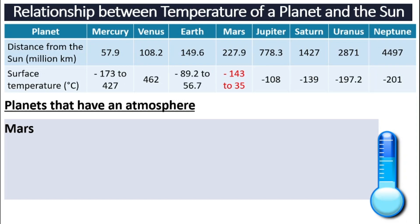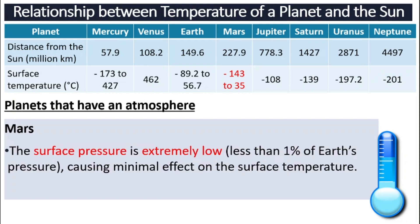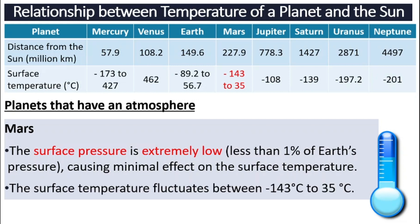The next planet with an atmosphere we are going to look at is Mars. The temperature on Mars ranges from negative 143 to 35 degrees Celsius. Why is it so different from Earth, even though it has an atmosphere? This is because the surface pressure of Mars is actually very, very low — less than one percent of Earth's pressure. This causes the atmosphere to have a very minimal effect on the surface, hence that wide temperature range.